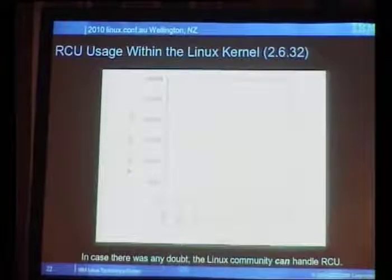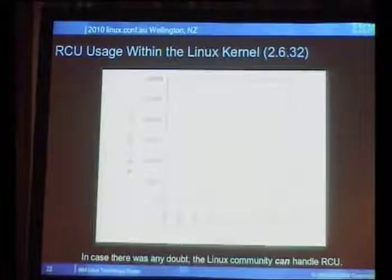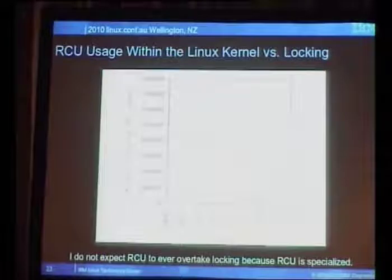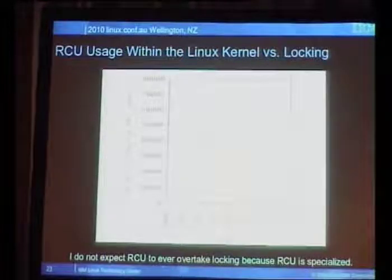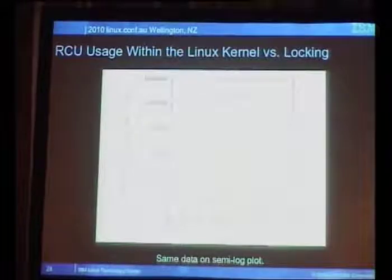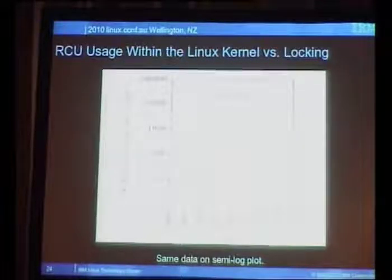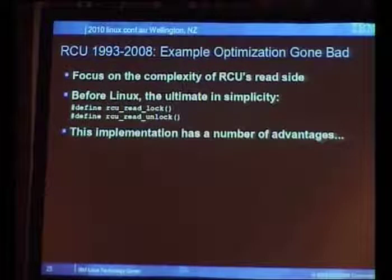There was concern some years ago that the Linux community couldn't handle RCU, but the community has done quite well with it. The number of RCU API mentions in the Linux kernel has grown significantly. On a log scale, RCU synchronization primitives appear to be reaching equilibrium at around four or five percent of the total. We're going to look at how RCU went bad over 15 years, focusing on the RCU read side.